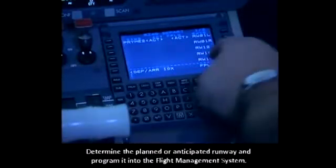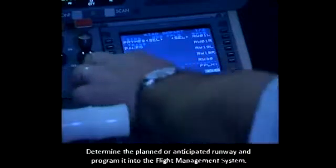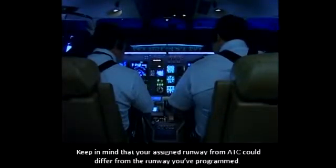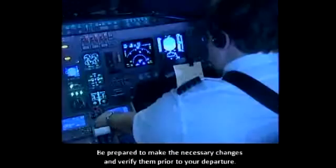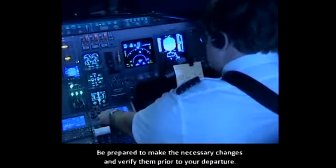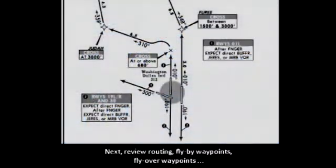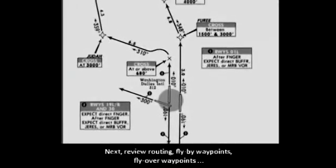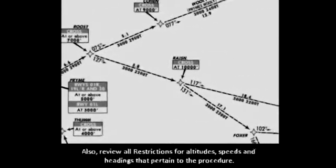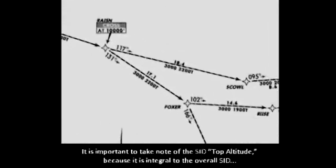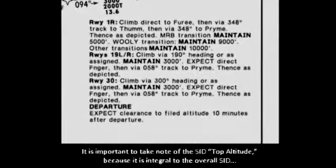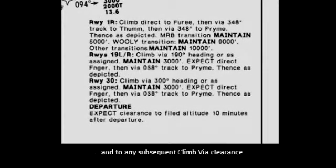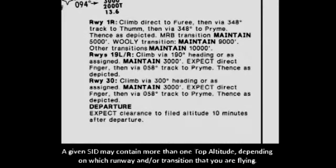Determine the planned or anticipated runway and program it into the flight management system. Keep in mind that your assigned runway from ATC could differ from the runway you've programmed. Be prepared to make the necessary changes and verify them prior to your departure. Next, review routing, fly-by waypoints, fly-over waypoints, and again confirm that this information is correctly programmed. Also review all restrictions for altitudes, speeds, and headings that pertain to the procedure. It is important to take note of the SID top altitude because it is integral to the overall SID and to any subsequent climb via clearance. A given SID may contain more than one top altitude depending on which runway and/or transition you are flying.